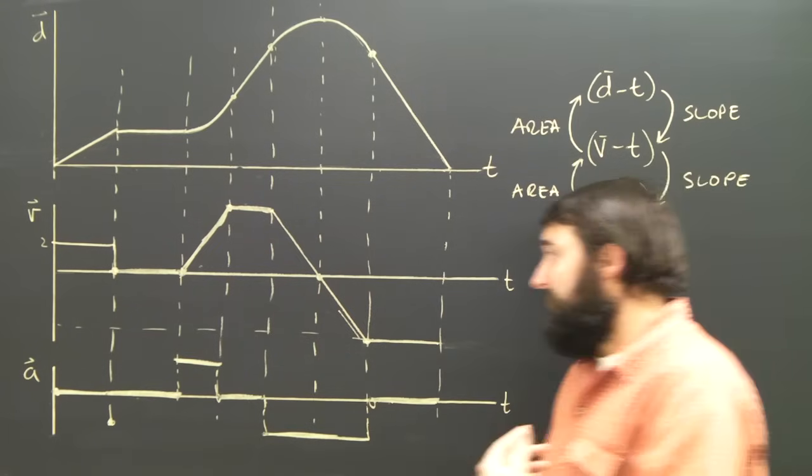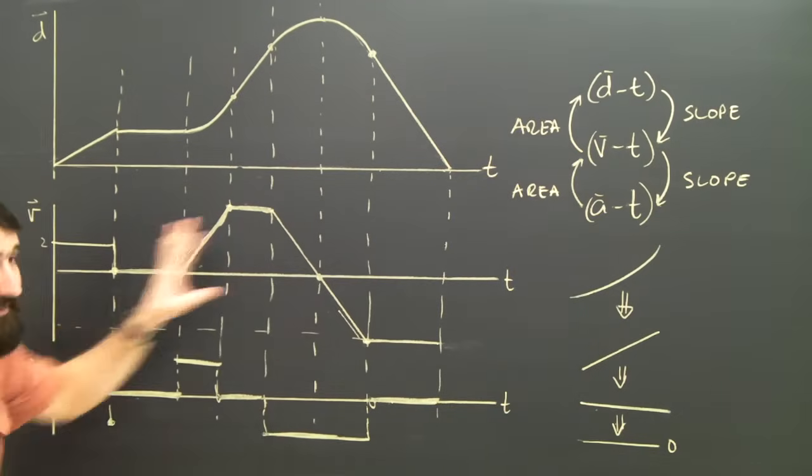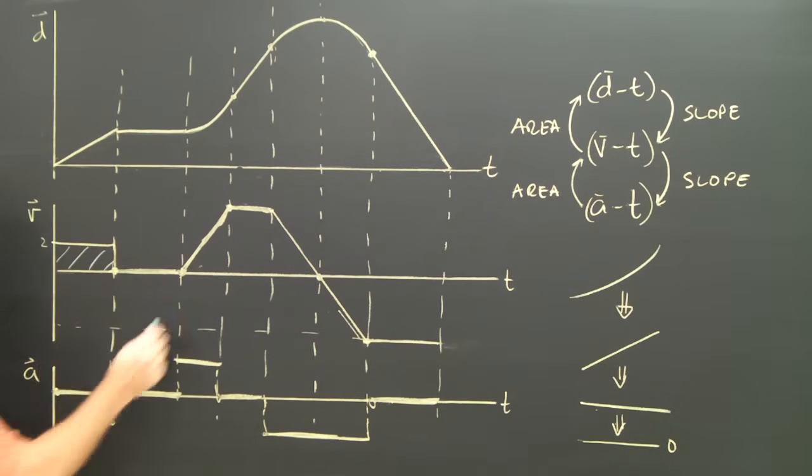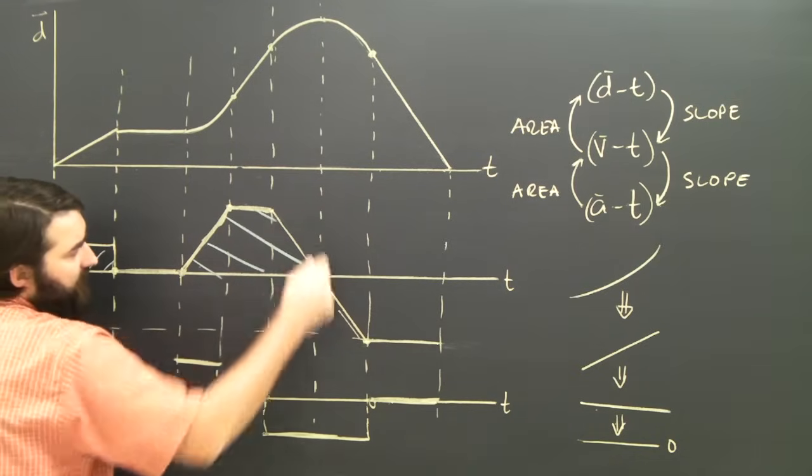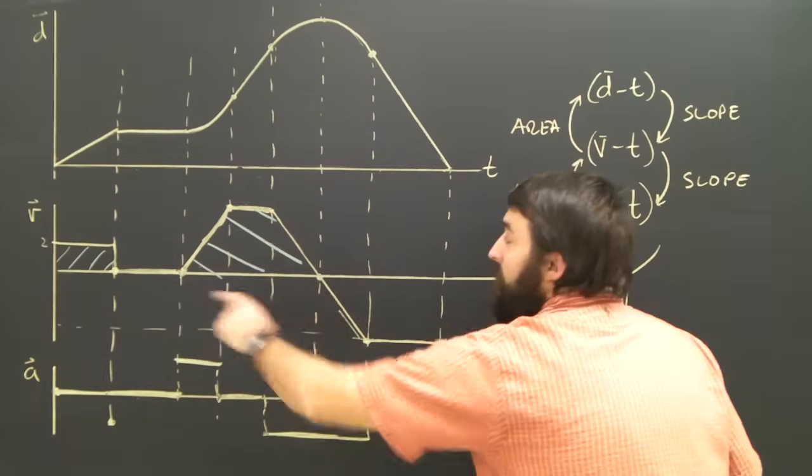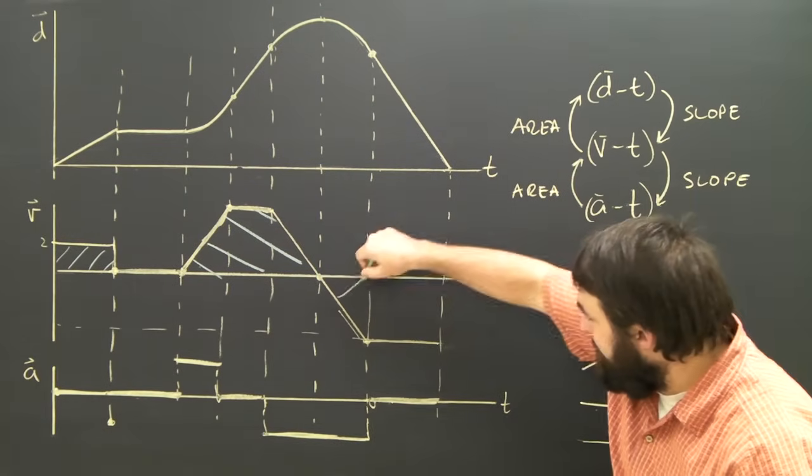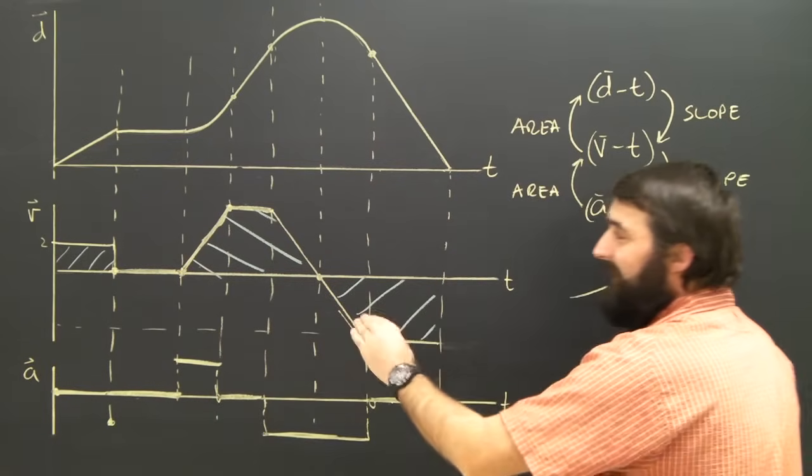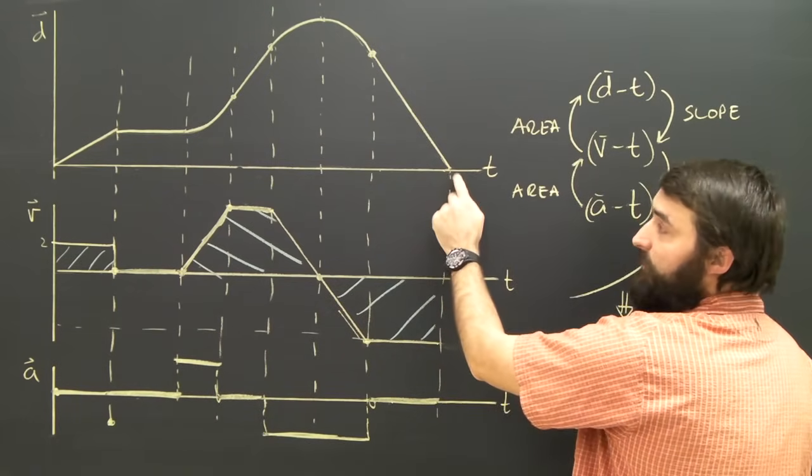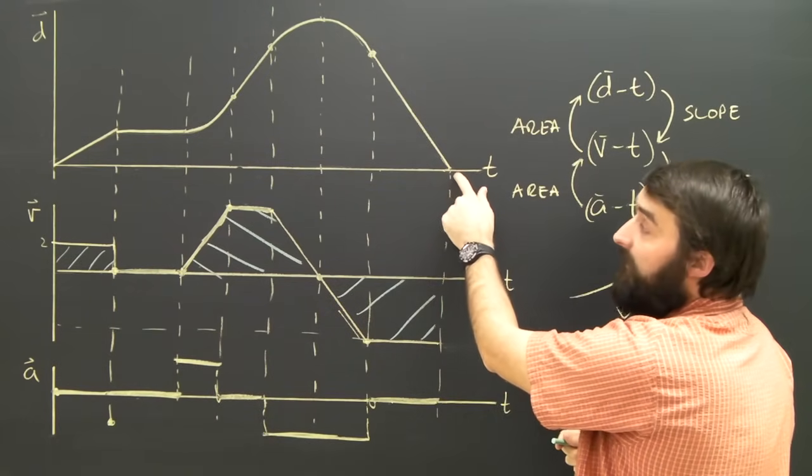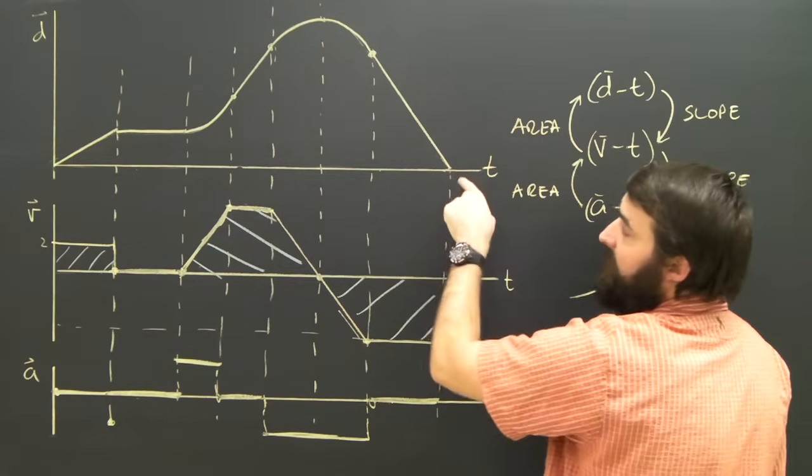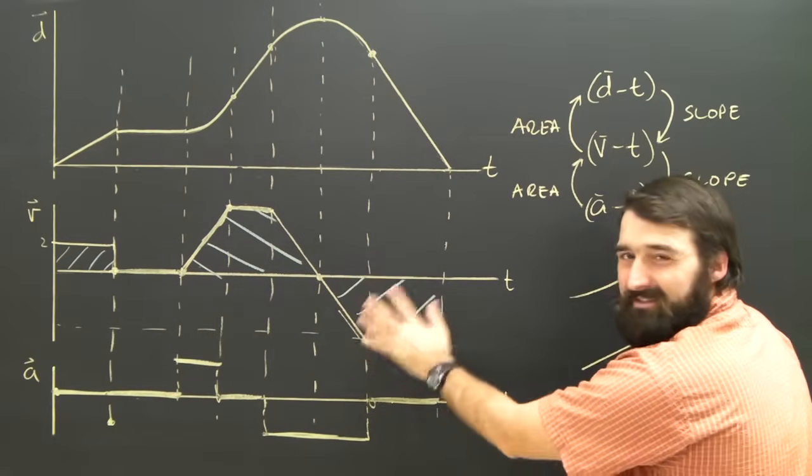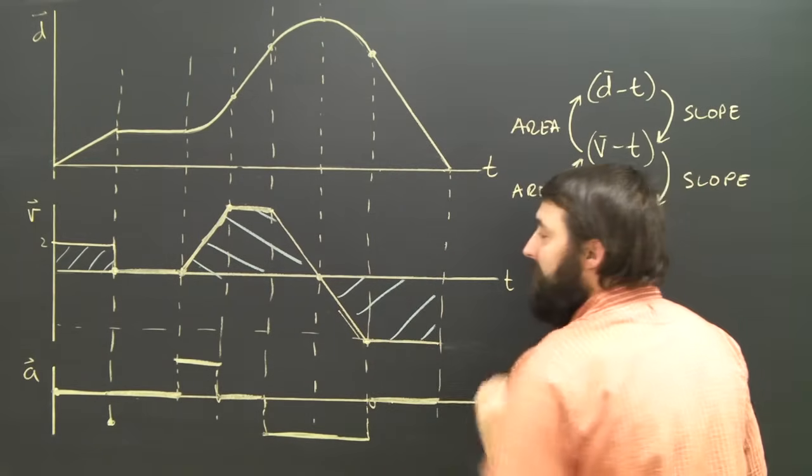Another thing we could point out, if we were inclined to take the area, the area of this box, the area of this trapezoid, would have to be the same as the area of this shape. Because we know this area, plus these two areas, would have to add up to zero. Because the object's total displacement, looking at the DT graph, is clearly zero. It started at zero, it ended at zero. So this area, plus this area, minus this area, well this area is negative, right? Will add up to zero.